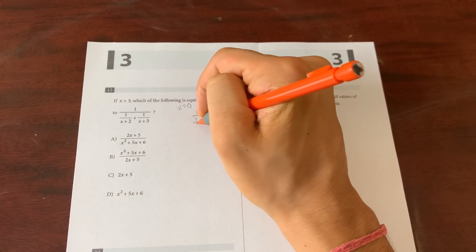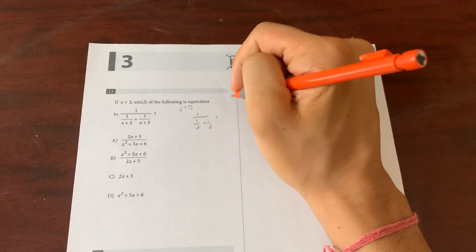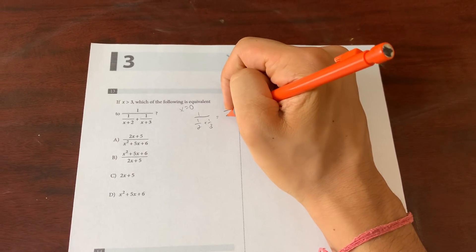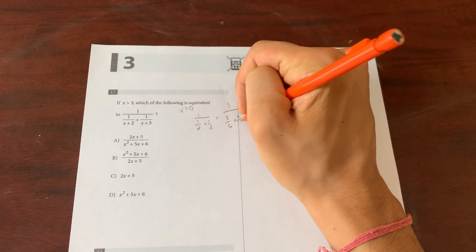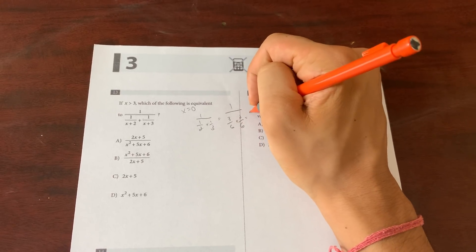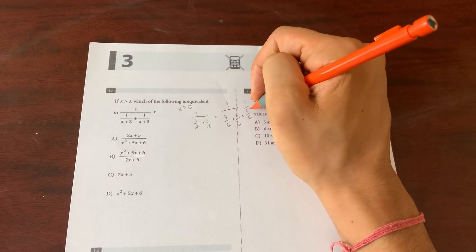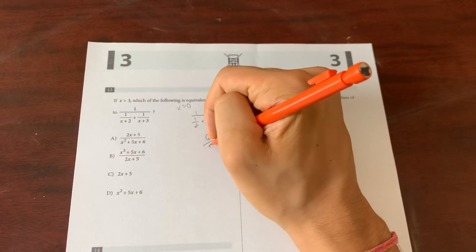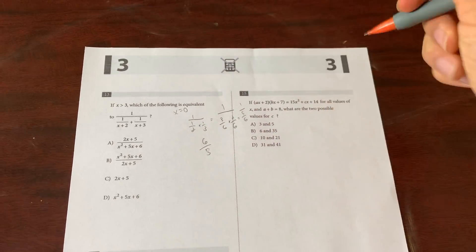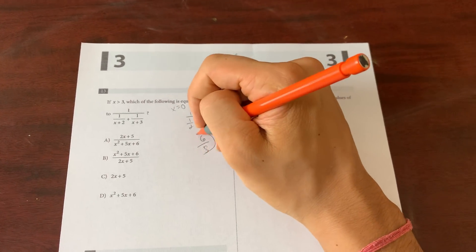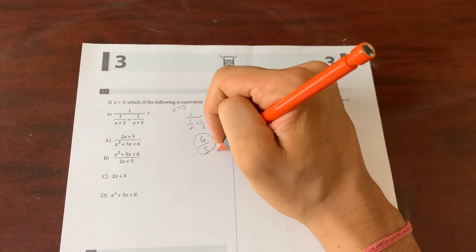So always start off with 0. So I put in 0 and you get 1 over (1/2 + 1/3) which is equal to 1 over (3/6 + 2/6) which is equal to 1 over 5/6, which is equal to 6/5 because you multiply by the reciprocal. That's basic stuff you guys need to know.